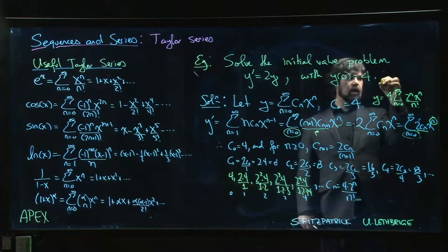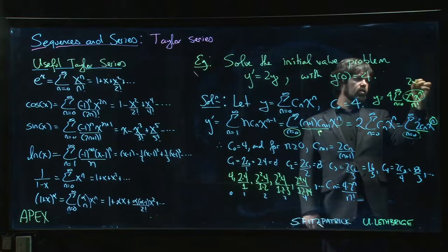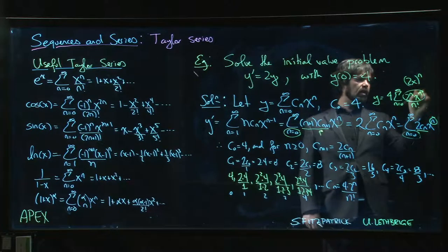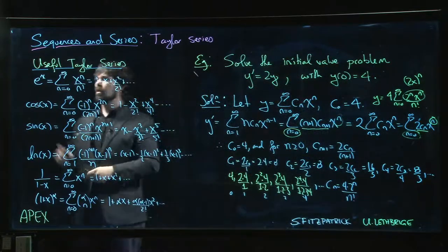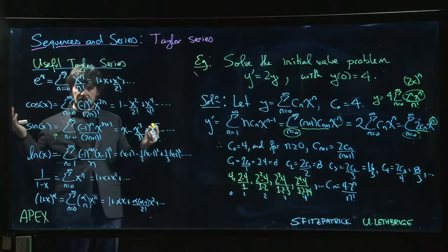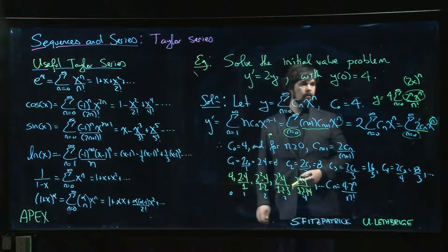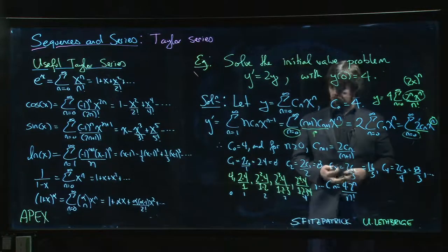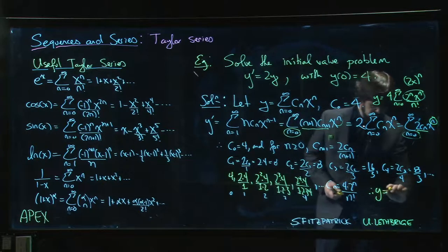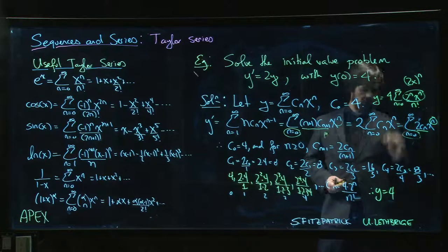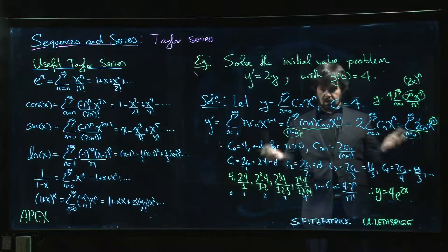I can write this as simply (2x) to the n over n factorial. That's like replacing x by 2x in the formula for the exponential function, in the Taylor series expansion for the exponential function. So what we actually get then is that y is equal to 4 times e to the 2x, and we have our solution.